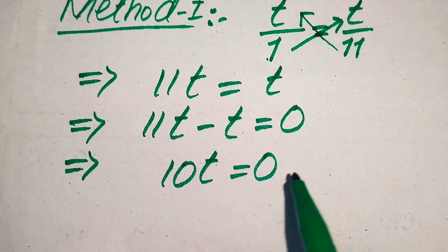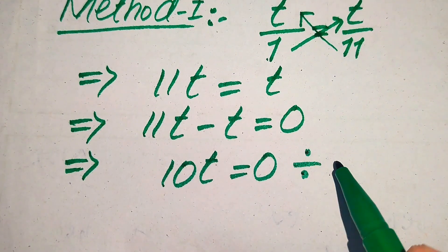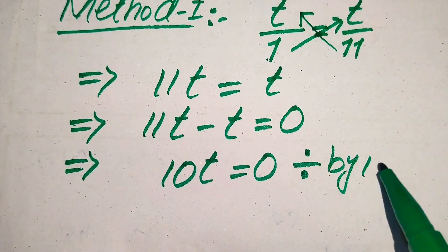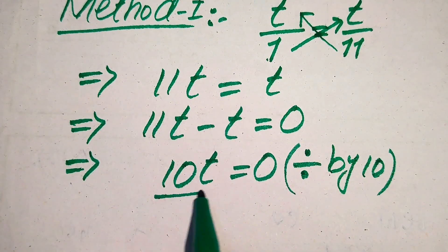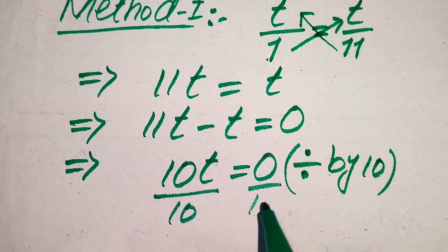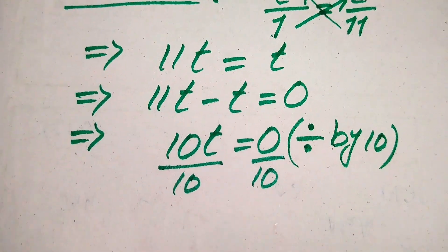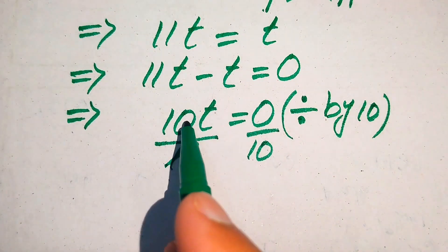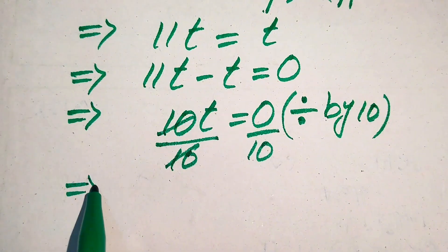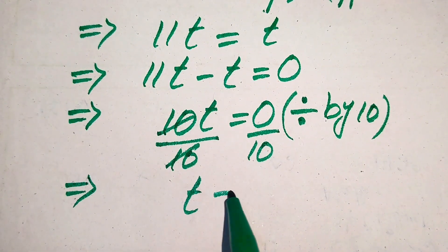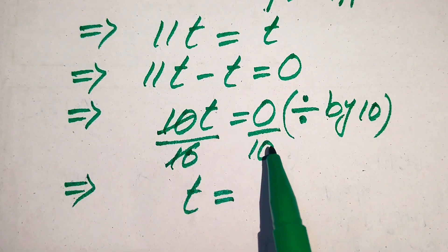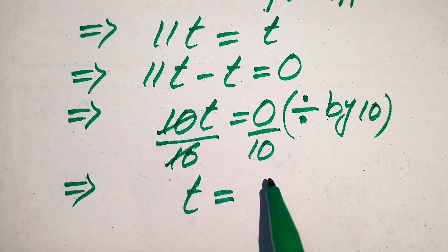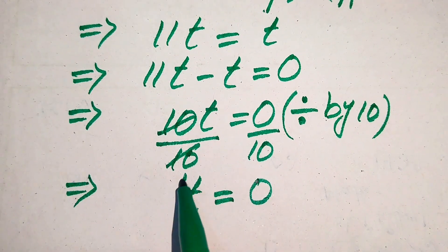Here, 11t minus t gives us 10t equals 0. To find the value of t, we divide both sides by 10 to remove it from the left-hand side. The 10s cancel out and we get t equals 0 divided by 10. Since 0 over any number is always 0, we get t equals 0.